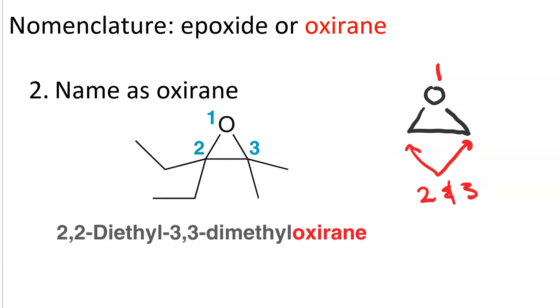And we decide which one is 2 and which one is 3 based on which will give us substituents with lower locants. And in this case, since we have four substituents, we're going to have 2,2,3,3 no matter what.